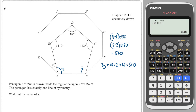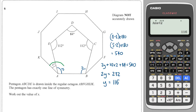Let's solve this equation. Take 540 and subtract 84, then subtract 112 times 2. That tells me that 2y is equal to 232. Dividing through by 2, y is equal to 116. But we're looking for x.